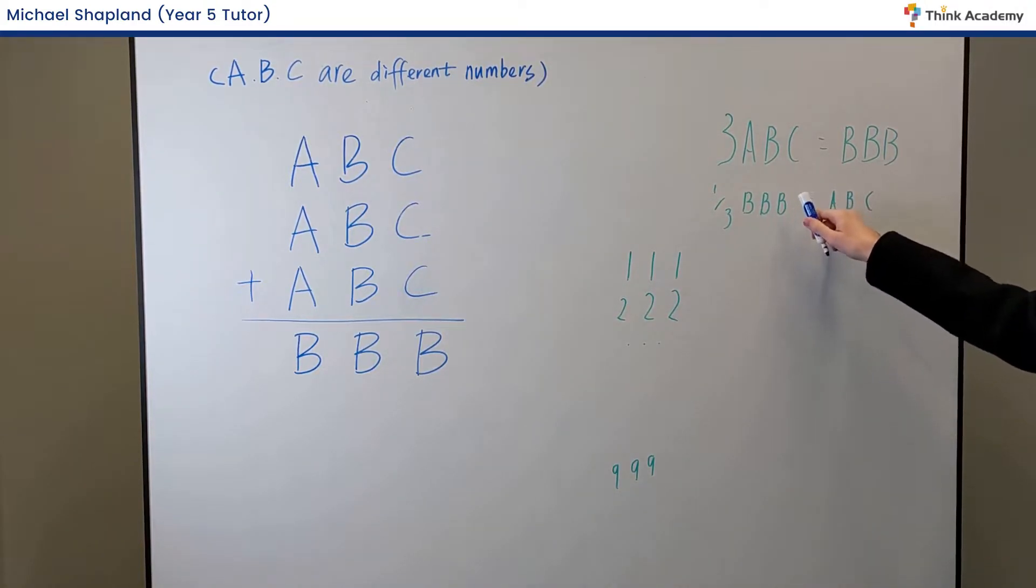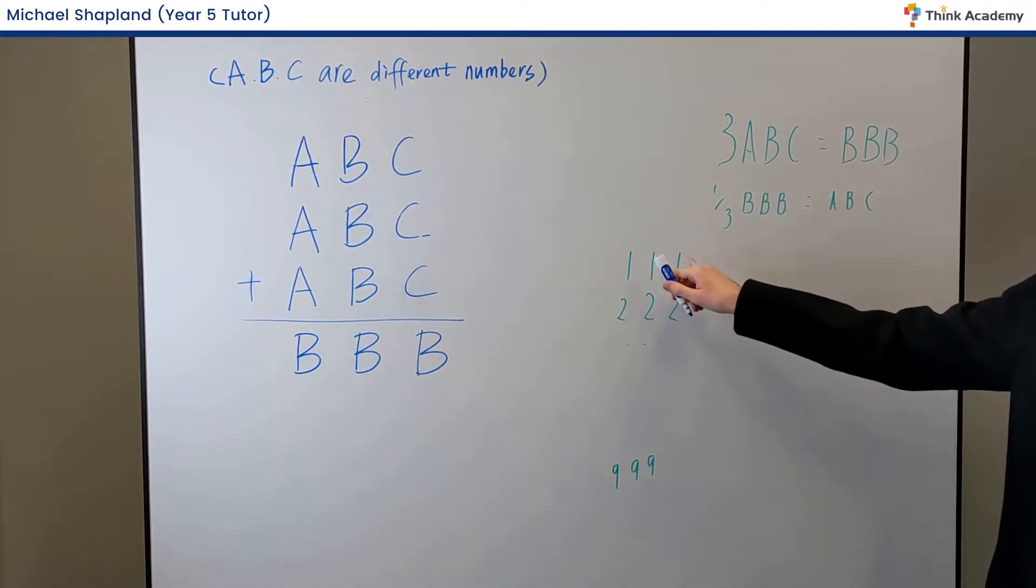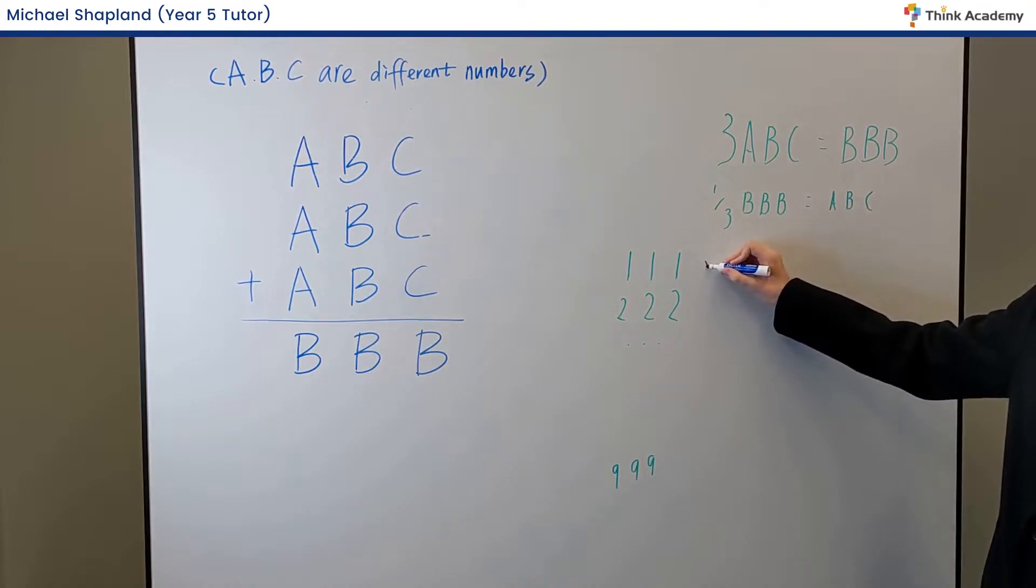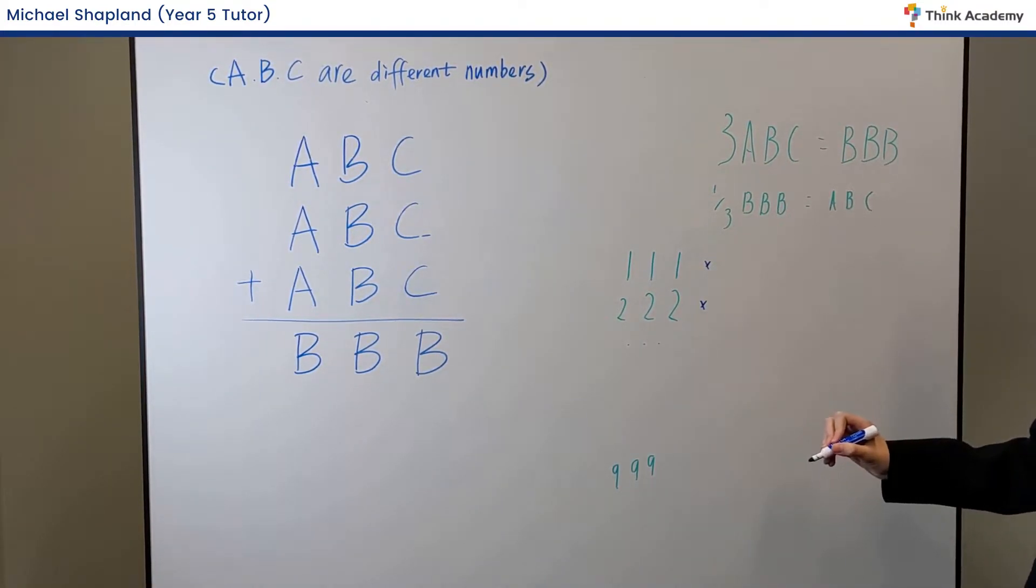ABC itself is a three-digit number. And if we divide these two numbers by three, we'll actually end up with a two-digit number. So we can eliminate 111 and 222 that way.